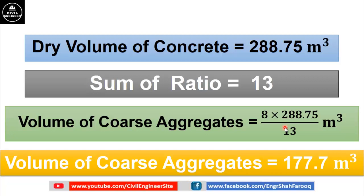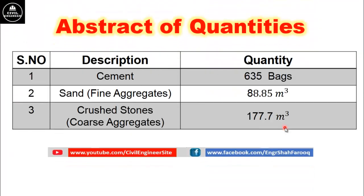We have now calculated quantities of all materials required for this PCC work. The summary of quantities for this PCC work is: number of bags of cement required is 635 bags; sand or fine aggregate is 88.85 cubic meters; and crushed stone or coarse aggregate required is 177.7 cubic meters. By using this method, you can calculate quantities of materials like cement, sand and crushed stone required for any type of PCC work.